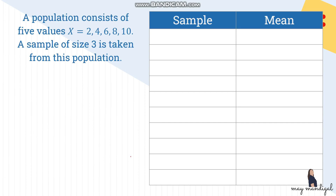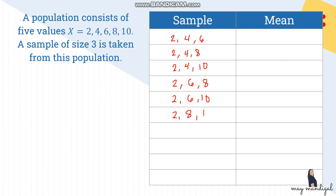Now let's write all possible samples. We have: {2,4,6}, {2,4,8}, {2,4,10}, {2,6,8}, {2,6,10}, {2,8,10}, {4,6,8}, {4,6,10}, {4,8,10}, and {6,8,10}. These are all possible samples of size 3 from the population.